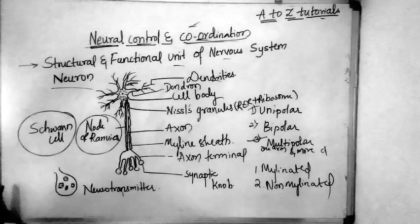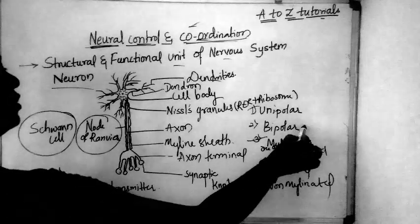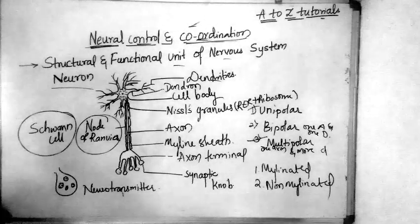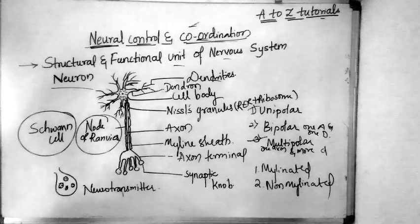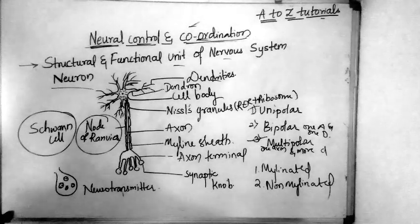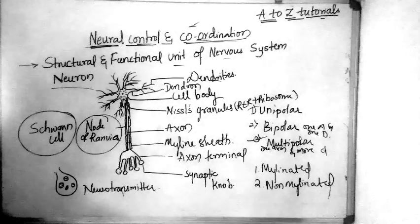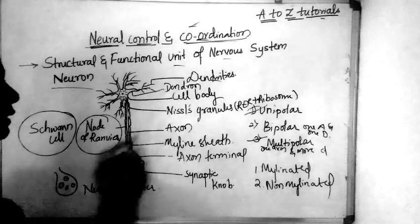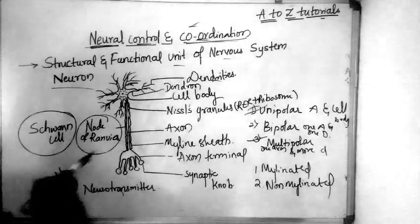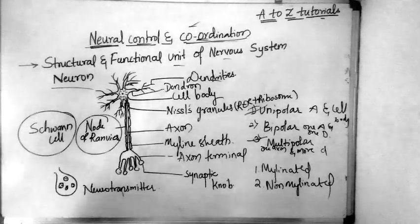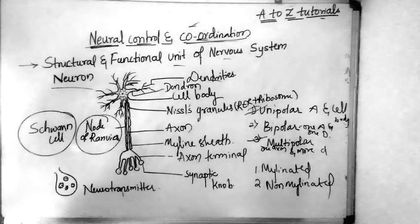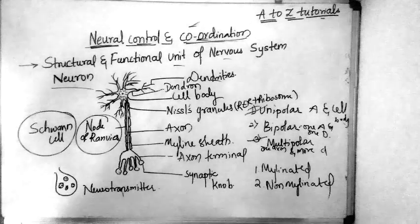Bipolar neurons have one axon and one dendron, and are found in the retina of the eye. Unipolar neurons have only the cell body and one axon — there are no dendrites. These are found in the early embryonic stages.